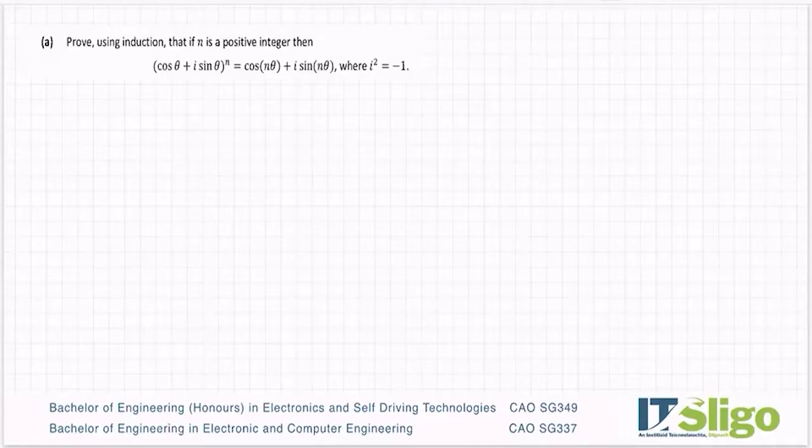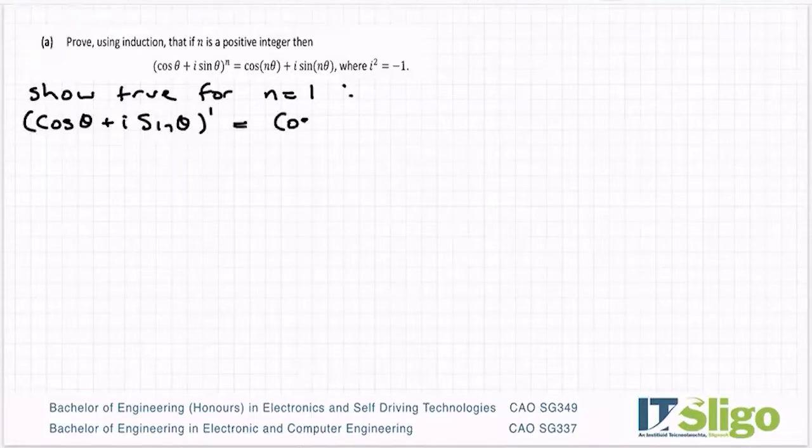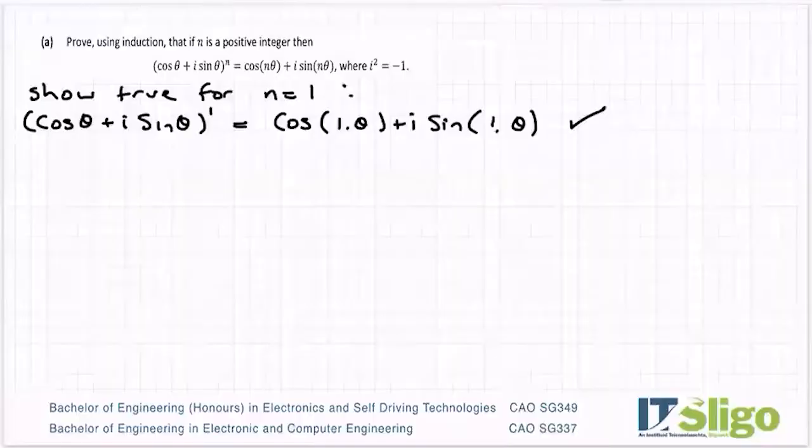Show true for the case where n = 1. So my left-hand side becomes (cos θ + i sin θ)¹ = cos θ + i sin θ, which equals cos(1·θ) + i sin(1·θ). They are obviously true, so it holds true for the case P(1), or n = 1.